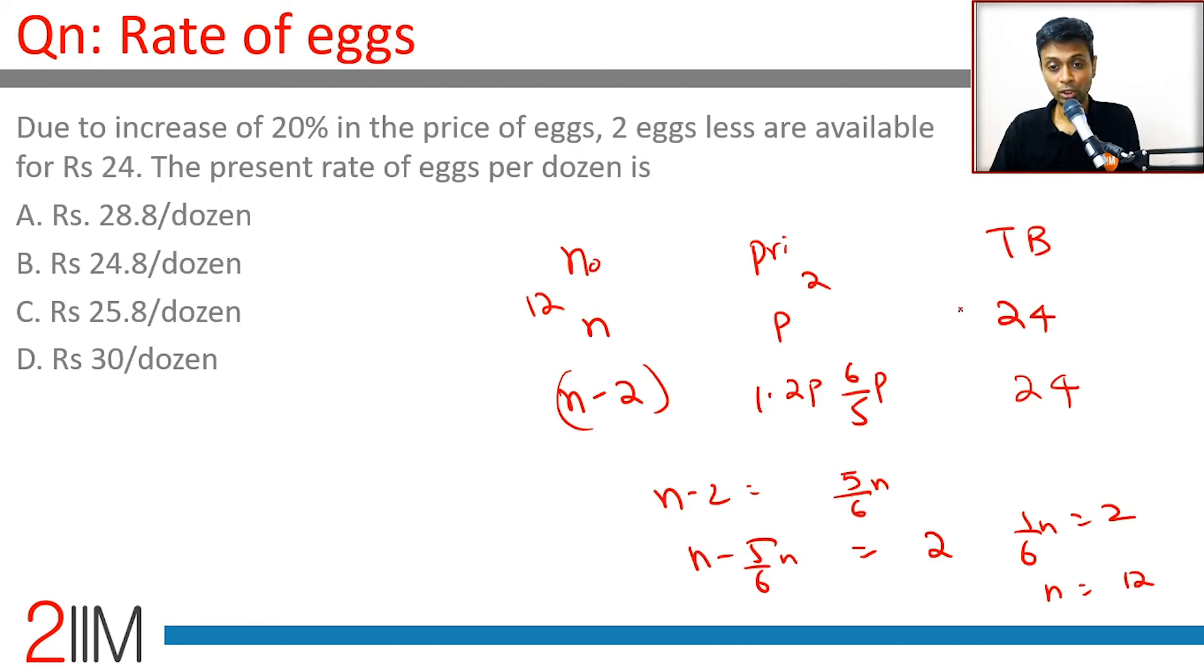New prices after an increase: it is 10 eggs for 24 bucks, or the price would be 24 into 1.2, which is 28.8 per dozen.